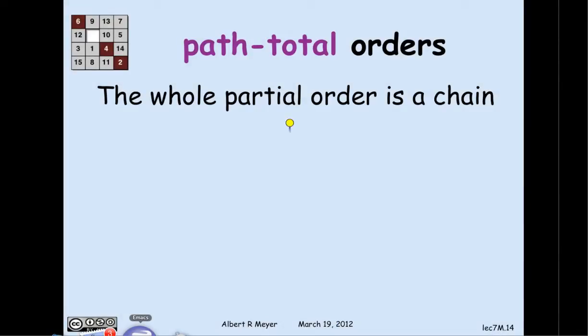Another way to say path total is that the whole order looks like a chain. If you give me a bunch of elements, there's going to have to be a biggest one, then the next biggest one, and so on — assuming any finite set of elements. The basic example of path total would be number properties of 'bigger than.' A basic example of something typically not path total would be subset containment, where you can perfectly well have two sets neither of which is contained in the other.